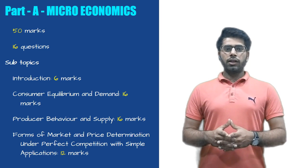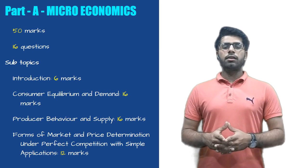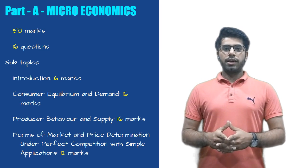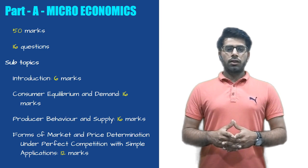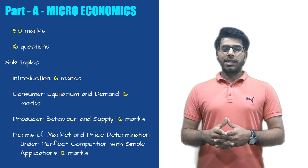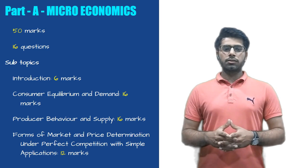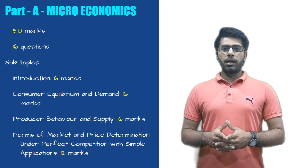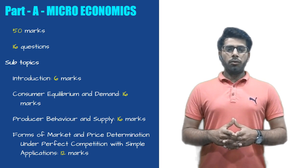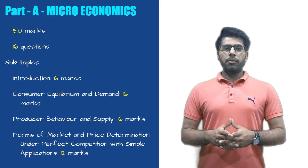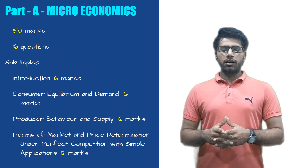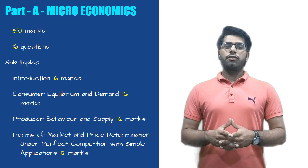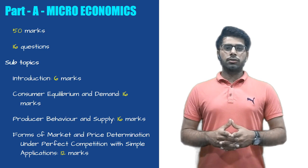Sub topics included in Part A are: Introduction of Economics carrying 6 marks, Consumer Equilibrium and Demand carrying 16 marks, Producer Behavior and Supply carrying 16 marks, and Forms of Market and Price Determination under Perfect Competition with Simple Applications carrying 12 marks.